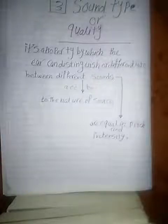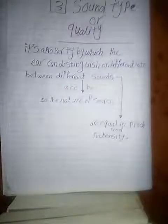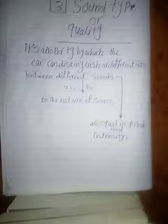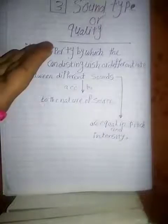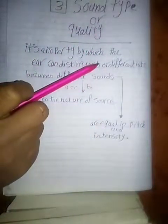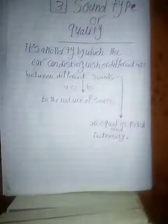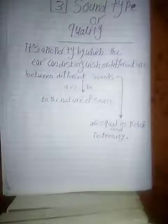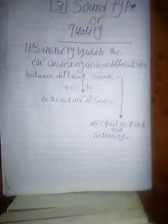Now we have the third property of sound: sound type or quality. Let's remember the properties of sound — number one: sound pitch, number two: sound intensity, and number three: sound type or quality. The definition of sound type or quality is the property by which we can differentiate between different sounds according to the nature of the source. For example, is the source a violin, a piano?